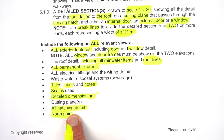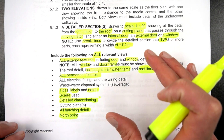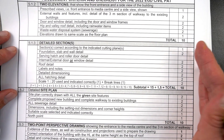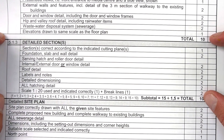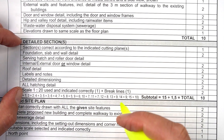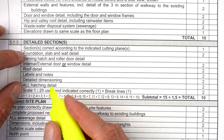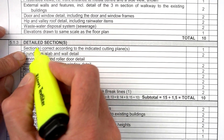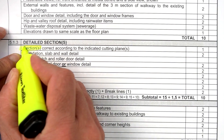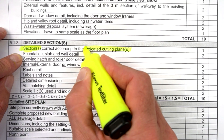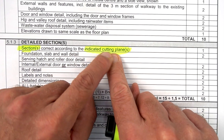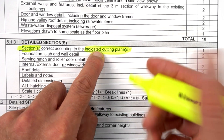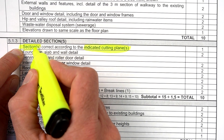Now let's look at the checklist that goes along with 5.1.3. It's available in the PET document - check the downloads if you missed it. Going through what's required to obtain maximum marks: first, are the sections you're drawing correct according to the indicated cutting planes? They're referring back to the cutting planes you showed on your floor plans. You'll have cutting planes on your floor plans that detail how these sections should be drawn - that's worth one mark.